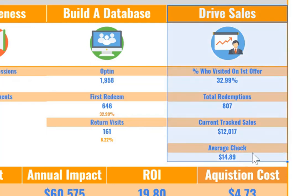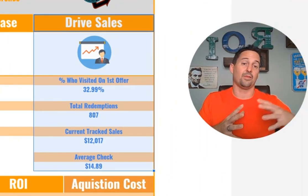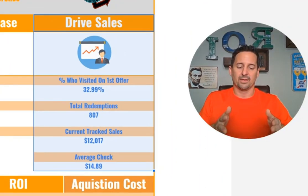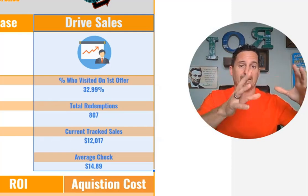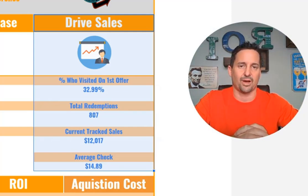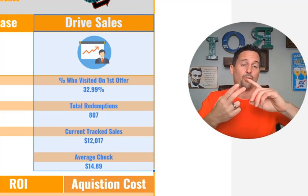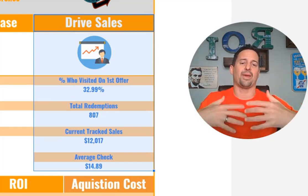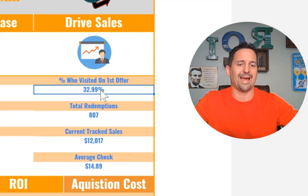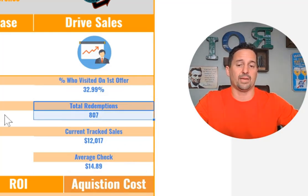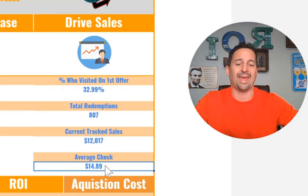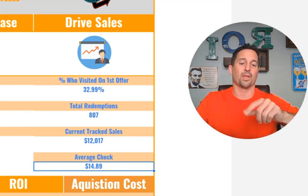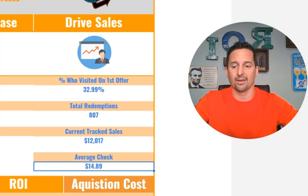We're not only trying to drive people in with promotions, but also drive future visits. Our goal as marketers is simple: get exposure, grow a database, and prove we can get them to walk in and spend good money. In the past four months, we've had 807 total redemptions — first redeems and return visits — with trackable sales of $12,017. The average net check after the discount is $14.89, which is higher than their typical average check.